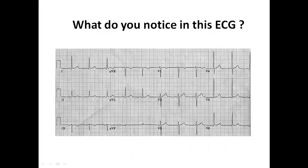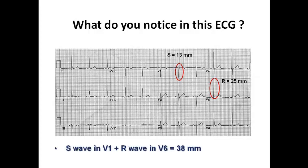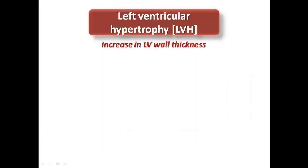Looking at this ECG example, we can see a deep S-wave of about 13 mm and a tall R-wave in V5 of about 25 mm. If we calculate the sum of the S-wave in V1 and the R-wave in V6, it would be 38 mm, which is a large number exceeding 35 mm.